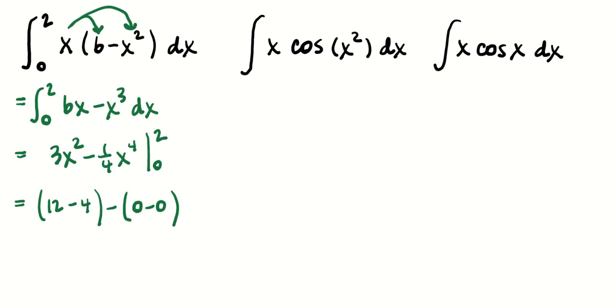If I had distributed the x to the 6 and the negative x squared, I was taking the integral of 6x minus x to the third, and then all of a sudden it became much easier. I could find an anti-derivative, plug in the top and bottom, and subtract.